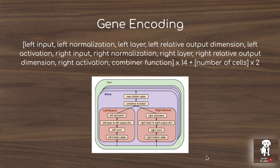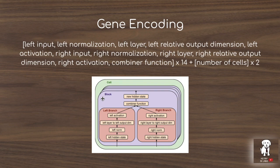Evolutionary algorithms work by modifying genetic codes corresponding to individuals in the population. One of the most important characteristics of neural architecture search algorithms is how the search space encodes the architectures, because naturally it biases the architectures that result from it. The Evolved Transformer targets a branching structure, where a hidden state input is modified by a left and a right branch. The resulting encoding has five dimensions for the left and right branches: input, normalization, layer, relative output dimension, and activation.